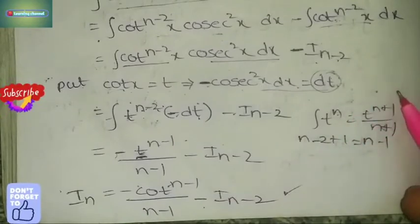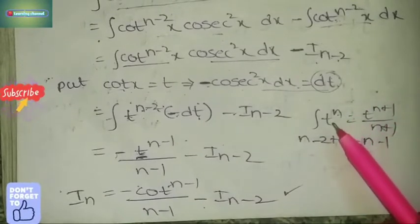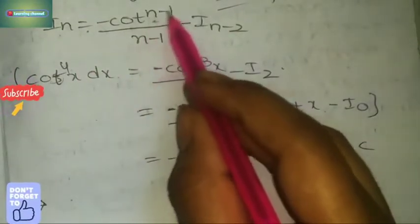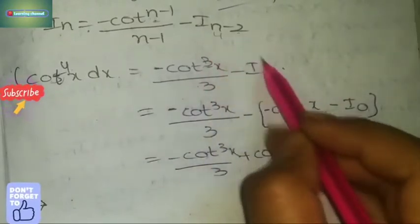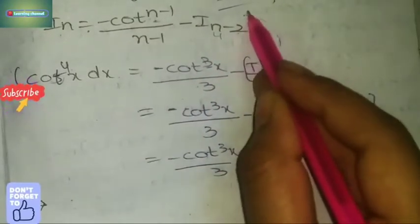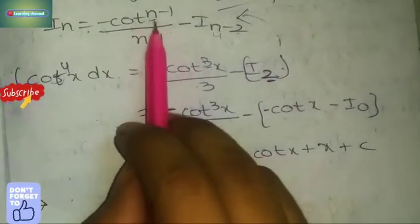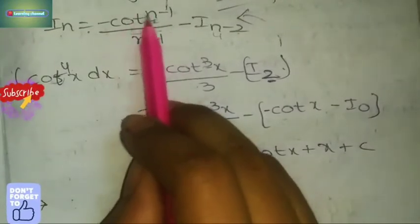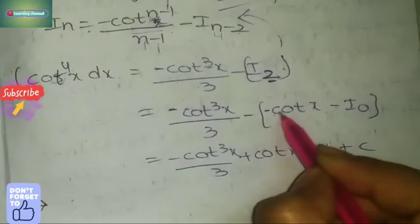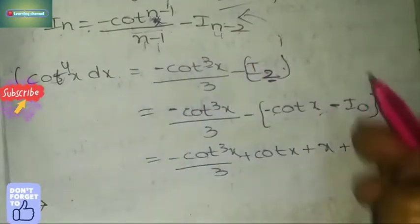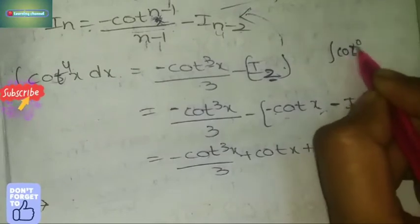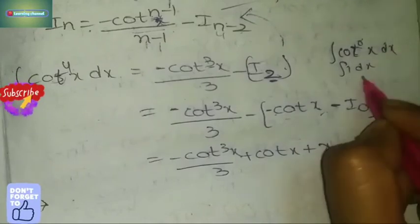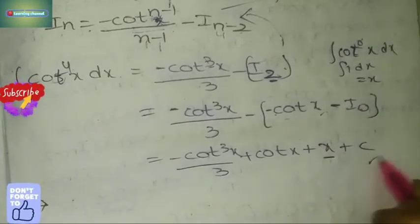Problem: evaluate integral cot⁴ x dx. Using the formula, substitute n = 4: I_4 = -cot³ x / 3 - I_2. Apply formula for I_2 with n = 2: -cot^(2-1) x / (2-1) - I_(2-2) = -cot x / 1 - I_0. Since I_0 = integral cot⁰ x dx = integral 1 dx = x, and minus into minus gives plus, the final answer is: -cot³x/3 + cot x - x + C.